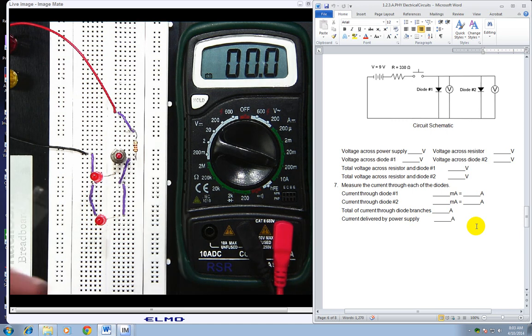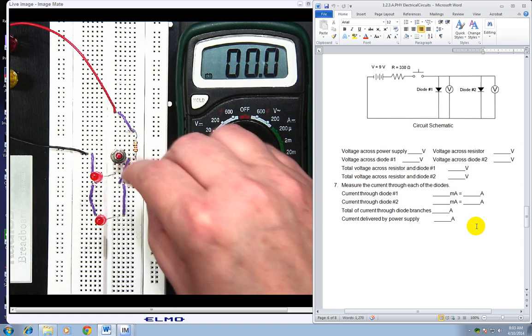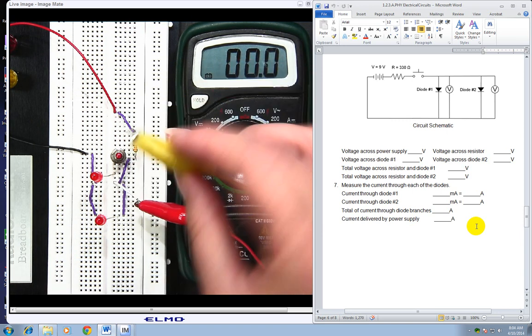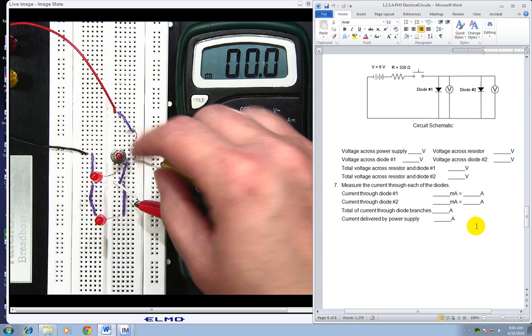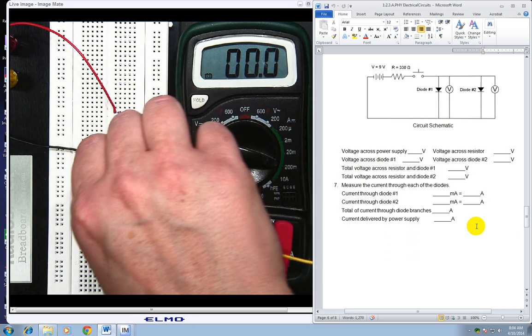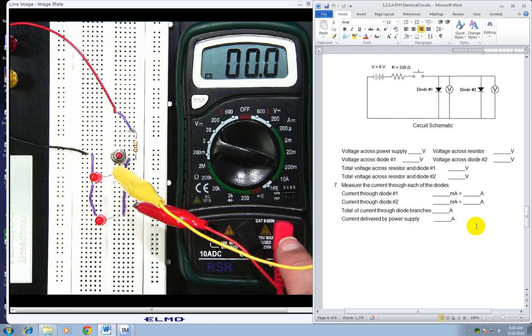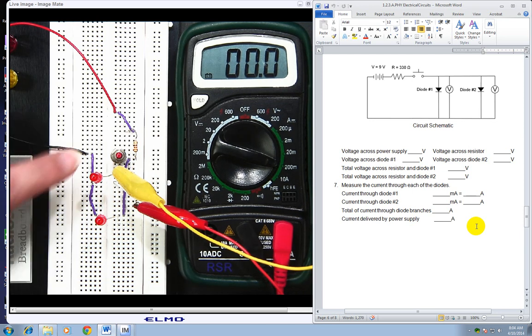All right, so now my red one is hooked to my red lead. And I am going to put it in first. And then my yellow one is hooked to my black lead. So I am going to put it in second. So now it's completing the circuit through the multimeter.